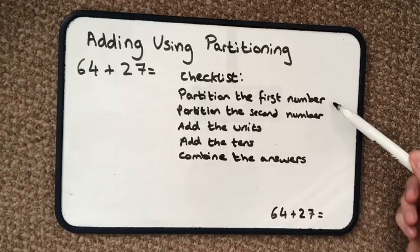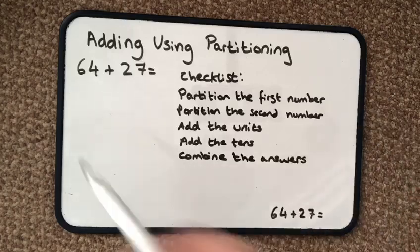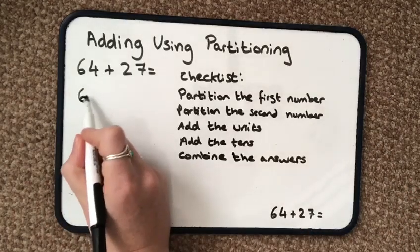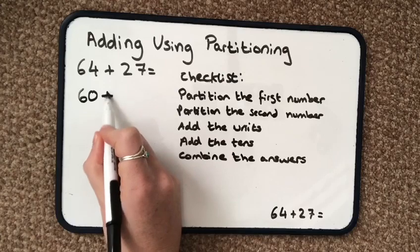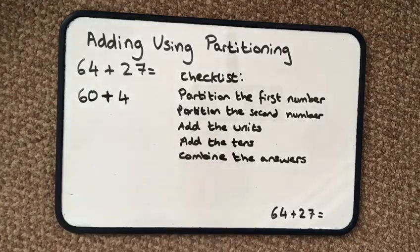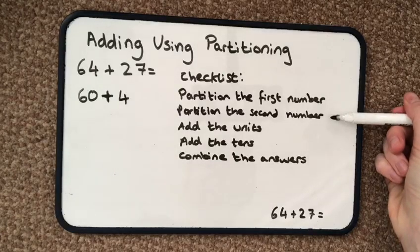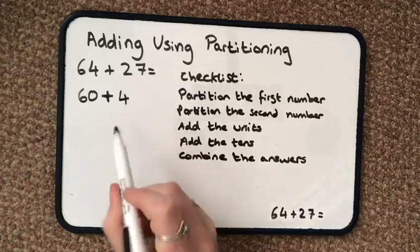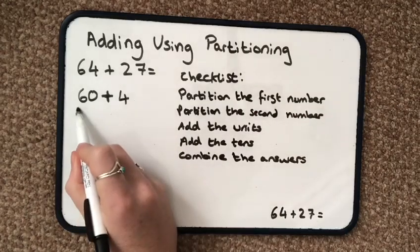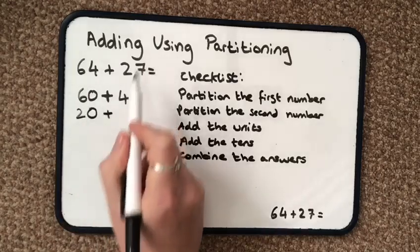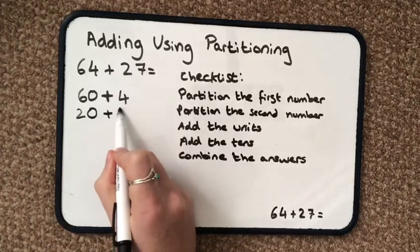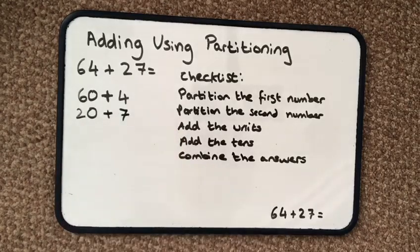The first thing on the checklist says I need to partition the first number — that means break it up into its tens and its units, sometimes called the ones. Then it says partition the second number. I do this straight underneath, making sure I keep my tens in my imaginary tens column and my units in my imaginary units column.